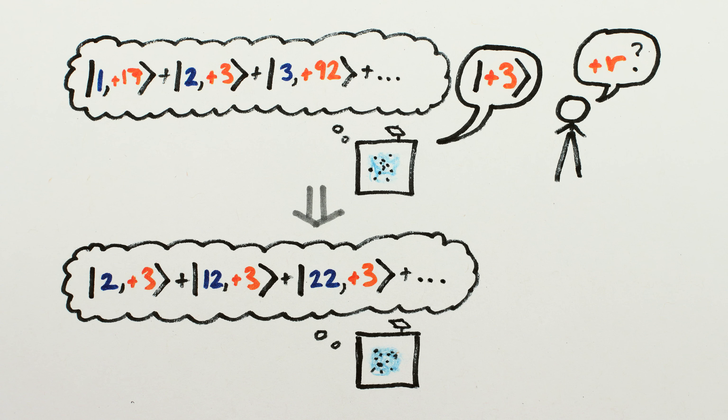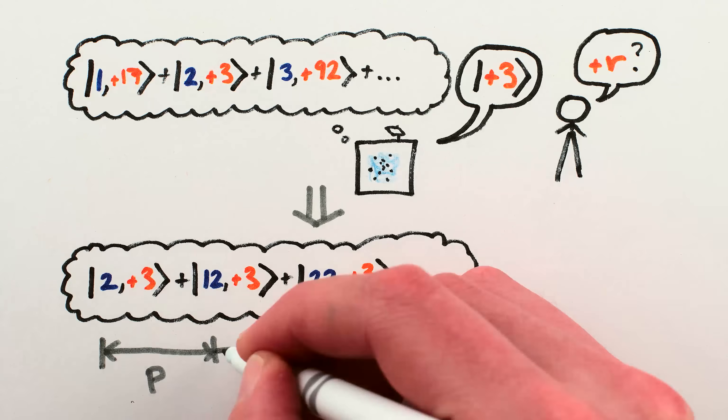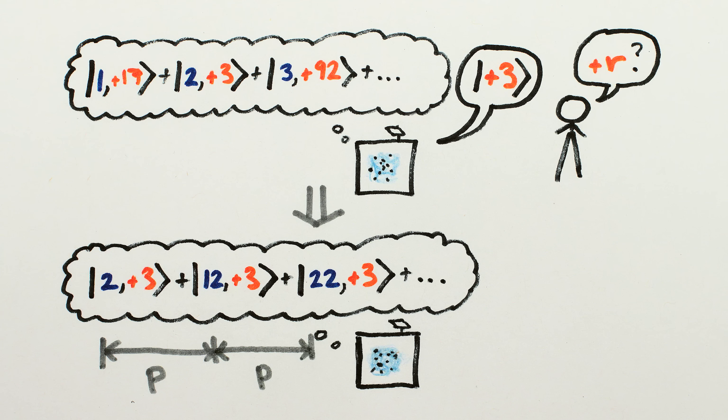This is one of the special properties of quantum computation. If you put in a superposition and get an answer that could have come from more than one element of the superposition, then you'll be left with the superposition of just those elements. And in our case, because of the repeating property, those powers are all numbers that are P apart from each other.